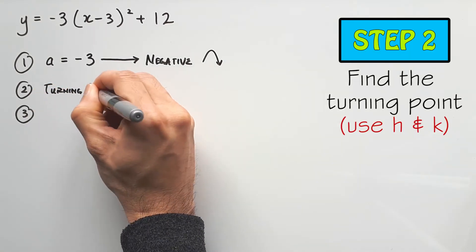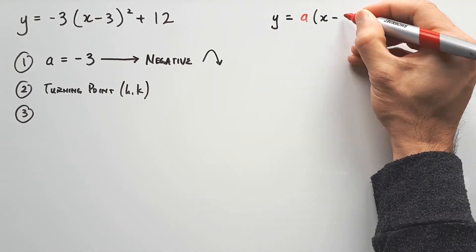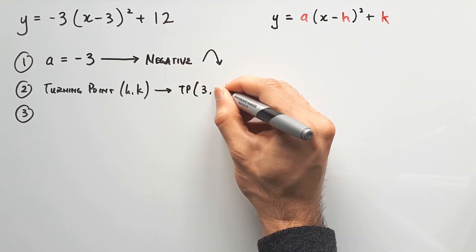Step 2, find the turning point. This equation is called the turning point form because you can read the turning point immediately from the equation as h and k. But be careful with h, you need to take the opposite of what you see in the bracket. As for the k value, take it as is. So h is positive 3, while k is positive 12. So the turning point is 3 comma 12.